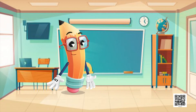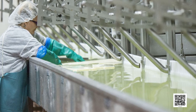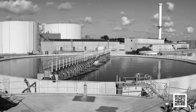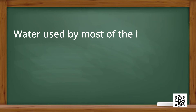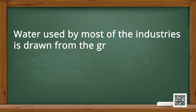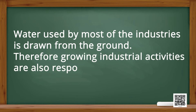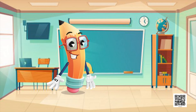The second reason is increasing industries. Water is used by all industries — almost everything that we use needs water somewhere in its production process. The number of industries is increasing continuously. Water used by most industries is drawn from the ground; therefore, growing industrial activities are also responsible for depletion of the water table.